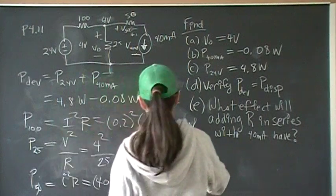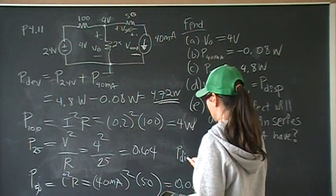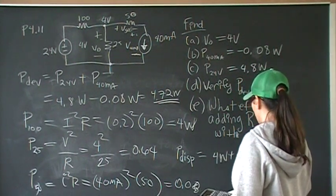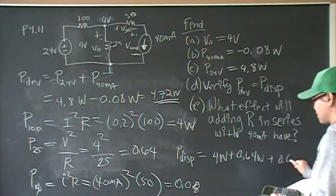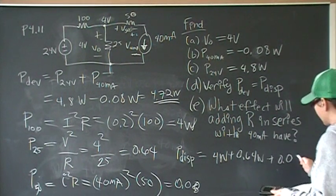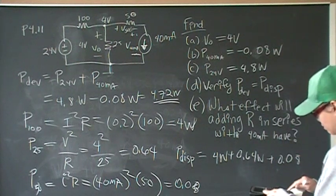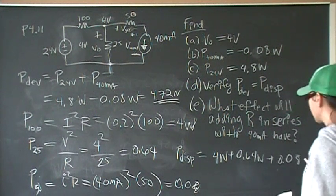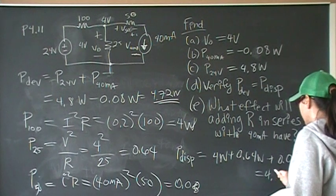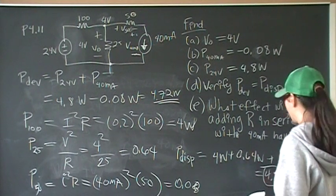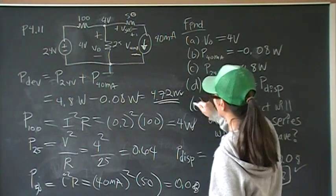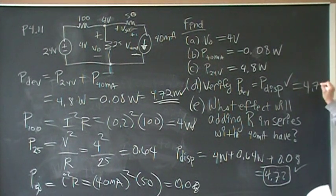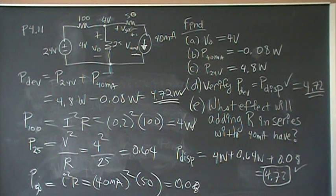So the power dissipated by the resistors is going to be 4 watts plus 0.64 watts plus 0.08. 4 plus 0.64 plus 0.08, and that's going to equal 4.72, and 4.72 watts is created, 4.72 watts developed, so you verify that power dissipated is equal to the power developed, which is 4.72 watts.